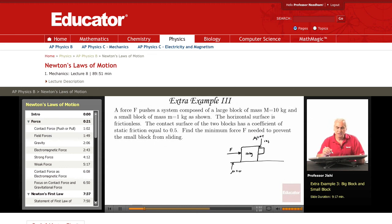Find the minimum force F needed to prevent the small block from sliding. Now if I don't apply a force at all, there's some friction here μ_s 0.5, but this block will just slide down.